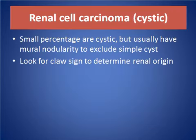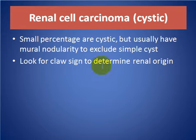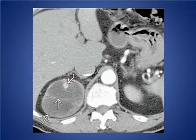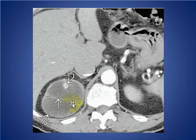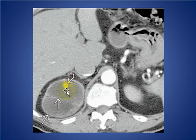Renal cystic tumor: it is a small percentage of cystic masses but usually has a mural nodule, which will exclude simple renal cysts. We should look for the claw sign to determine renal origin. Here we see a cystic mass lesion in the right kidney arising from the superior pole, with thick enhancing wall, enhancing septation, and a mural nodule — consistent with renal cystic carcinoma.